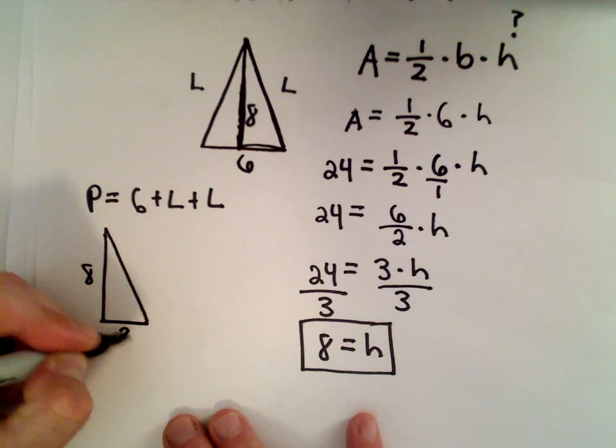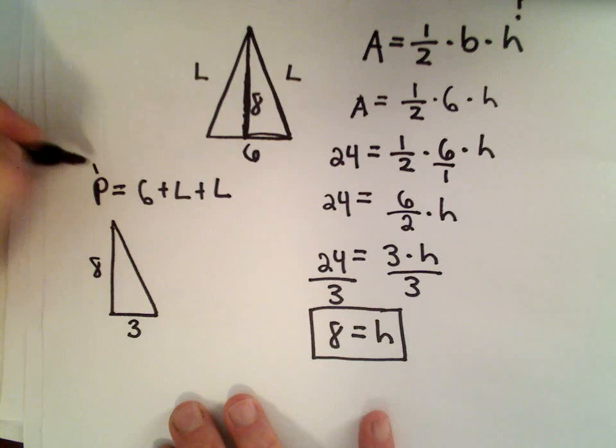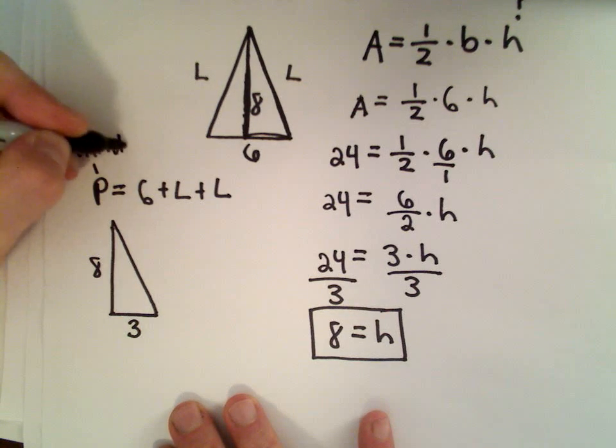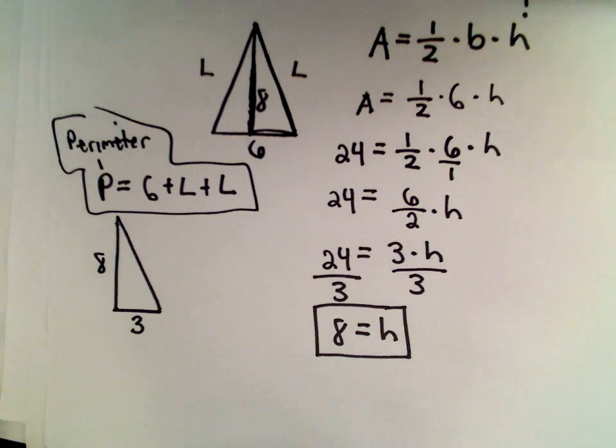Well, if the entire base had a length of 6, if we take half of that, that's going to give us 3. So let's write perimeter. Okay, so ultimately that's what we were trying to, that's the other thing we have to figure out.